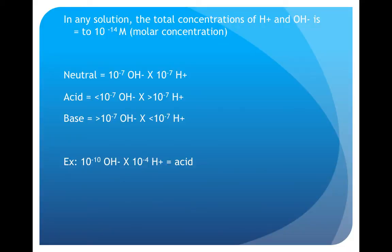In any solution, the total concentration of hydrogen and hydroxide ions is equal to 10 times minus 14 molar concentration. Therefore, if something is neutral, it has 10 to the minus 7 hydroxides and 10 to the minus 7 hydrogen ions. If it's an acid, it has a higher amount of hydrogen ions and a lower amount of hydroxide ions. If it's a base, it has a higher amount of hydroxide ions and a lower amount of hydrogen ions.